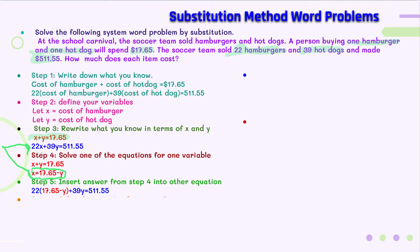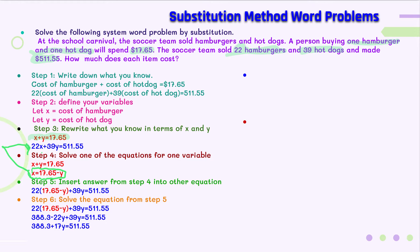I fully anticipate you using a calculator to do all this math — I don't expect you to multiply 22 times 17.65 by hand. Step six is to solve that equation. When I distribute the 22, I get $388.30 minus 22Y plus 39Y equals $511.55. Combining like terms gives $388.30 plus 17Y equals $511.55. Subtracting $388.30 from both sides, I get 17Y equals $123.25, so Y equals $7.25.